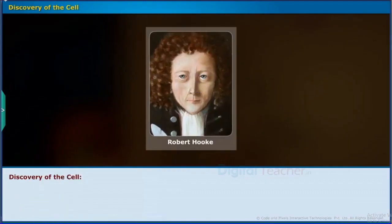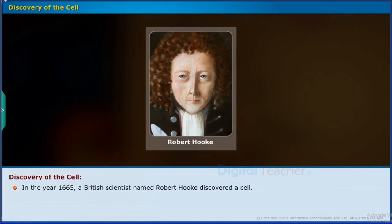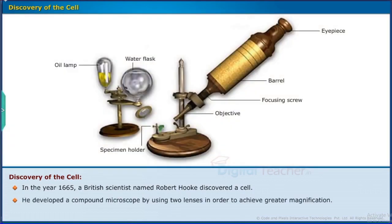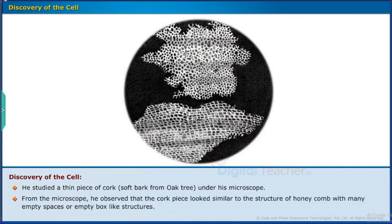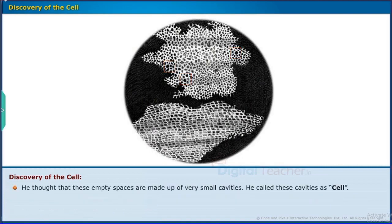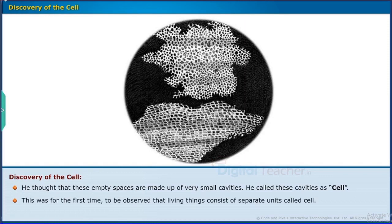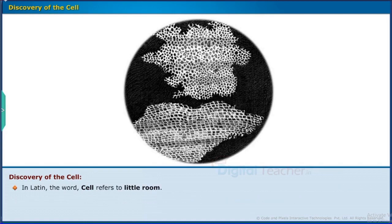In the year 1665, a British scientist named Robert Hooke discovered the cell. He developed a compound microscope using two lenses to achieve greater magnification. He studied a thin piece of cork — soft bark from an oak tree — under his microscope and observed that the cork looked similar to a honeycomb with many empty, box-like spaces. He called these cavities 'cells.' This was the first time living things were observed to consist of separate units. In Latin, the word 'cell' refers to 'little room.'